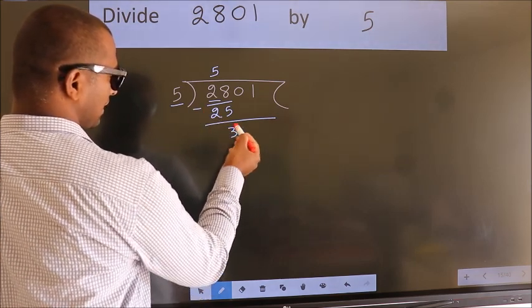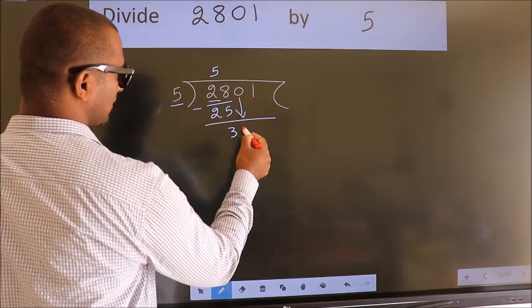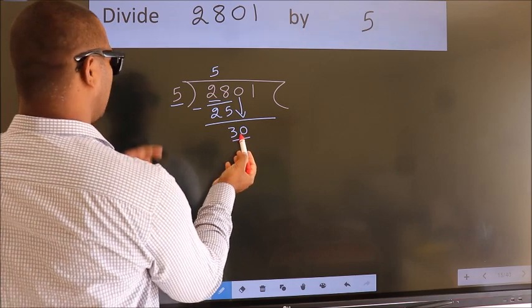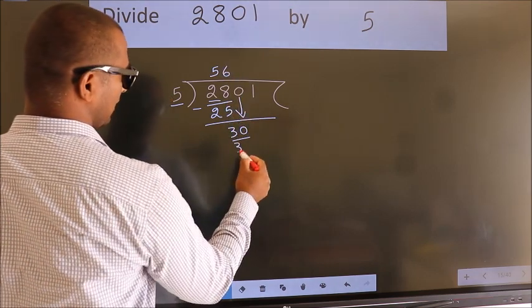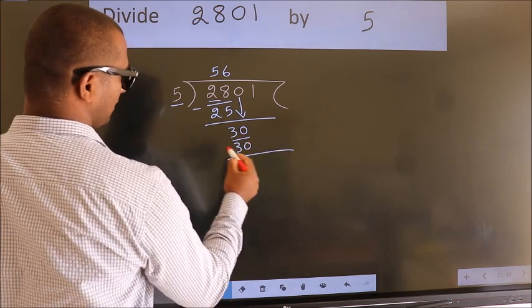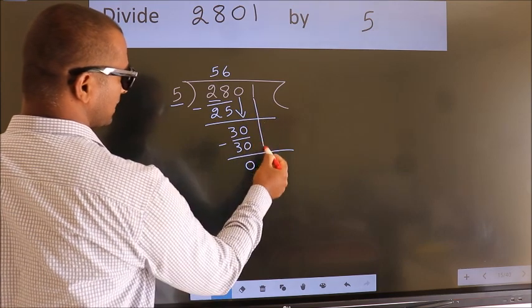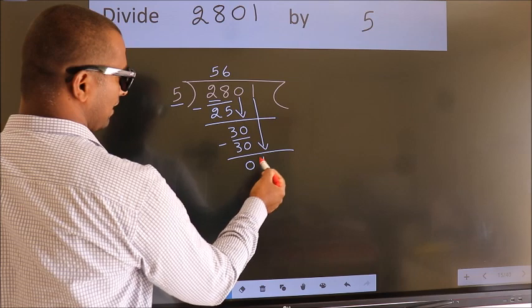We get 3. After this, bring down the beside number, so 0 down. So 30, when do we get 30 in 5 table? 5 sixes 30.